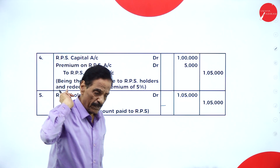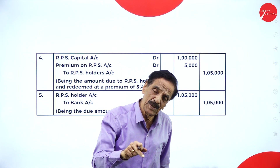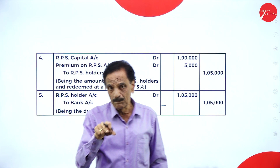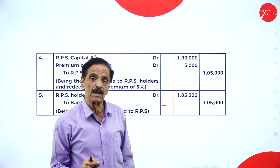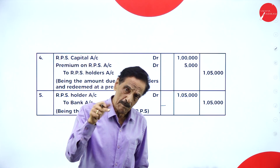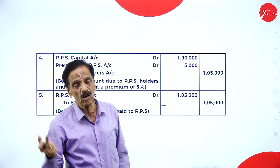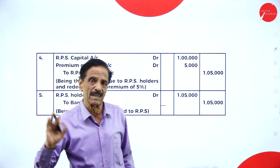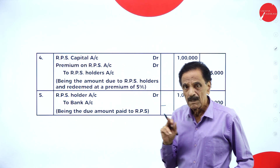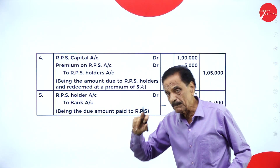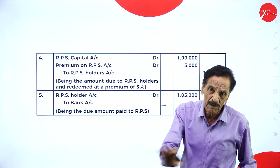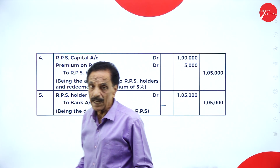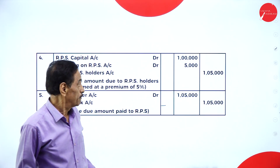To summarize: first, issue the shares; second, create the CRR; third, transfer entry — redeemable preference share capital account and premium account debit to holder account; fourth, holder account debit to bank account. The premium will be paid from equity share premium. If equity share premium is not available, take from the profit and loss account.